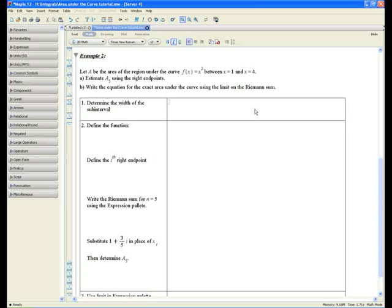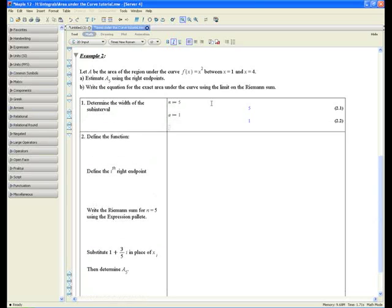Let's first define a few constants. You have to be in math mode. There are 5 rectangles, and this is how we define a constant: n colon equals 5 and hit enter. Similarly, we're going to define the rest of our constants. The function begins at a equals 1 and ends at